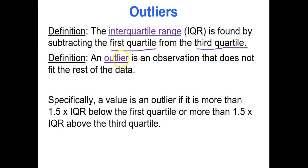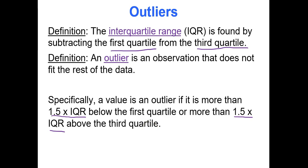The IQR is used to find outliers. An outlier is an observation that does not fit the rest of the data — it's kind of far away from the rest of the data. The specific definition is that a data value is an outlier if it is more than 1.5 times the IQR below Q1 or more than 1.5 times the IQR above Q3. In this course, we will visually look at data to identify outliers.